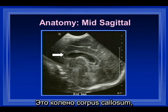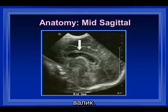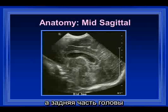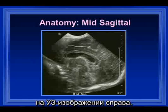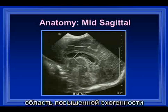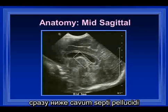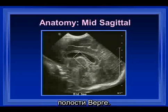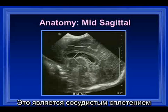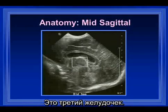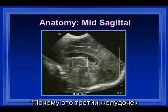Here we have the genu, the body, and the splenium of the corpus callosum, and here we see the ultrasound image of this anatomy. This is the genu of the corpus callosum, the body, the splenium, with the baby's head facing to our left and the posterior aspect of the baby's head to our right. This is the cingulate gyrus, and here we can see bright echogenicity right below the cavum septum pellucidum and the posterior extension, the cavum vergae.